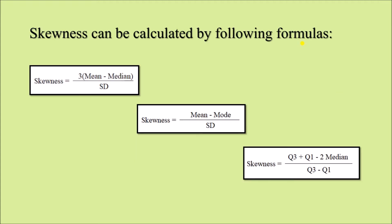Skewness can be calculated using certain formulas. If we have the mean and median values, we use: Skewness = 3 × (Mean − Median) / Standard Deviation. If the median is not available but we have the mode, then: Skewness = (Mean − Mode) / Standard Deviation. If we have quartile values — Q1, Q2, and Q3 — remember Q2 is the median, so skewness can be calculated as: (Q3 + Q1 − 2 × Median) / (Q3 − Q1), where Q3 − Q1 is the interquartile range.